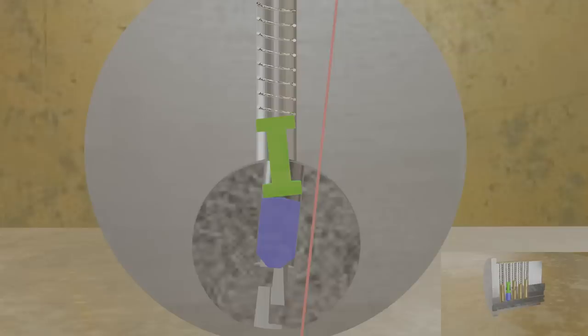Lock pickers call this a false set. You can't really turn the core fully to open the lock, but you get the initial feeling like you're going towards open. But as we can see, there's no way to force the core to turn much more, as the spool is blocking the shear line. If we were picking and got this false set, we'd be going and looking for some feedback by pressing on each pin.